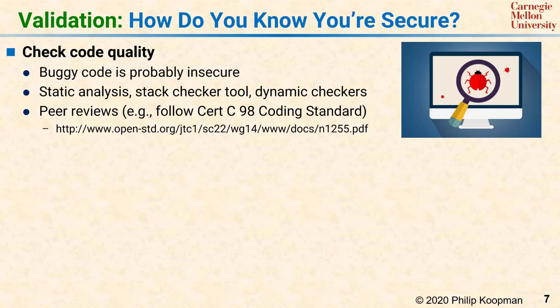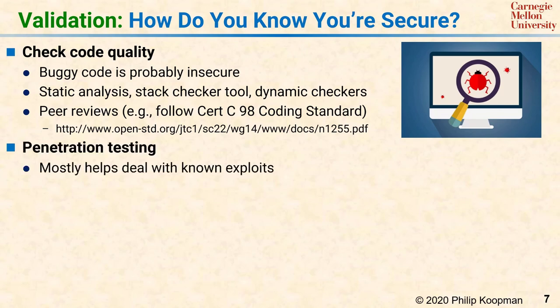One CERT C rule is that you should never use an unbounded string operation, to avoid buffer overflow attacks. Even with good code, it still makes sense to do some security testing. Penetration testing typically involves using a list of known exploits to ensure your system is not vulnerable to attacks already incorporated into script-kiddy type tools. It may also include fuzz testing for invalid input exploits and dictionary attacks on passwords. The goal is to go after the low-hanging fruit of security — a great idea, but it does not get you to 100% security alone.